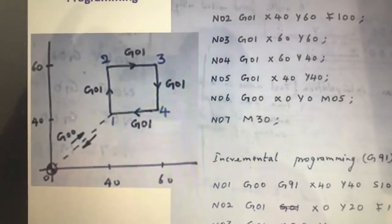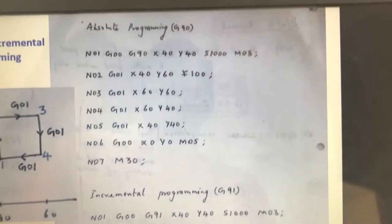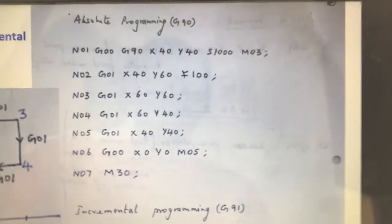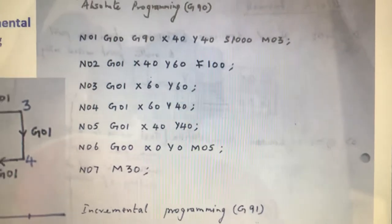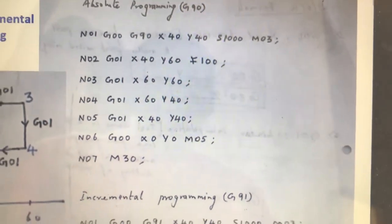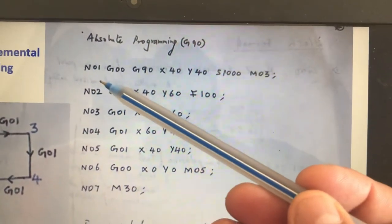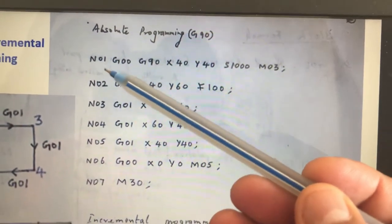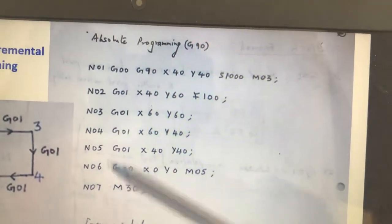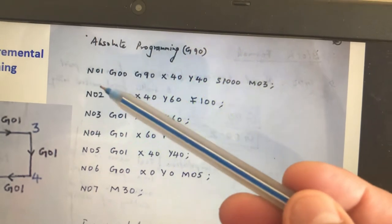It is for the same tool path 1, 2, 3, 4. First, when you do CNC programming, as I told you yesterday about the word format, the block formats, it starts with the line number N01. I have given here N01, N02, N03, N04, just like a serial number. Here we call it as a block number.